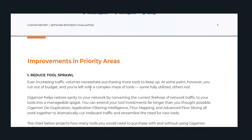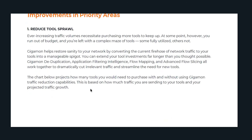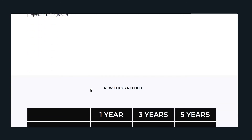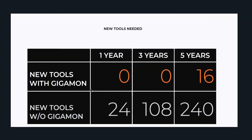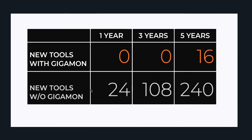We then go through each of the priorities one by one, and each of them has a chart or a graph. For reduced tool sprawl, what you see here is if you just proceed status quo, this is the number of tools that you are going to have to purchase one, three, and five years out. And then we show you if you use Gigamon traffic reduction, you'll see that in the first three years you don't have to procure any more tools, and in the fifth year just 16 tools compared to 240.